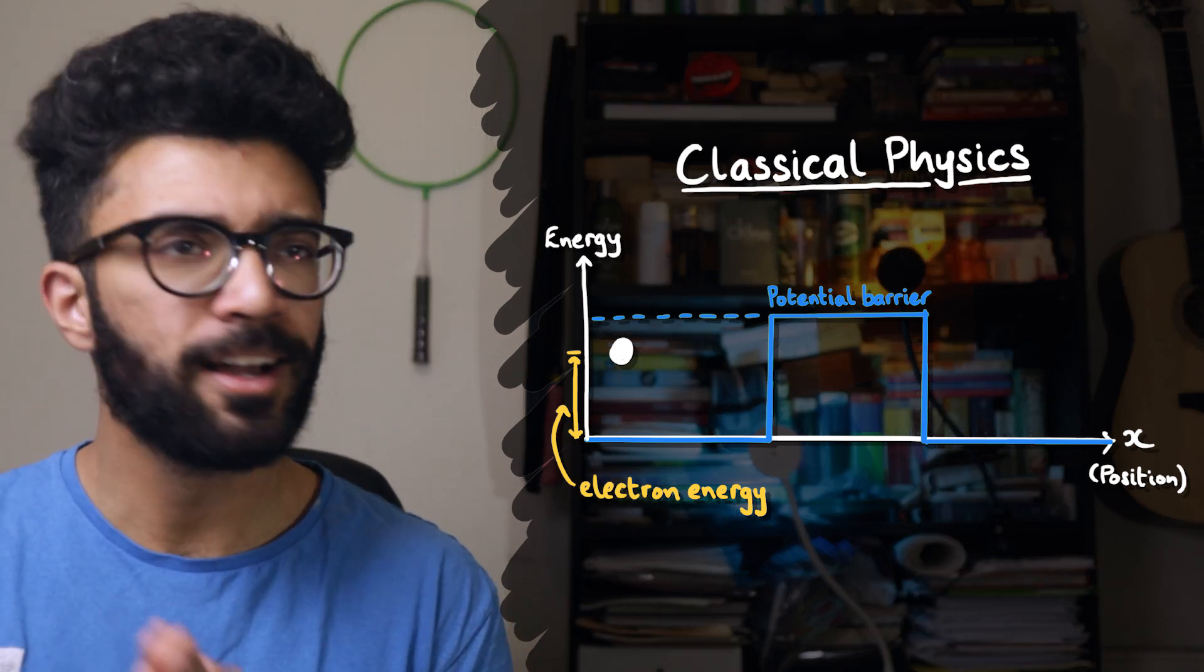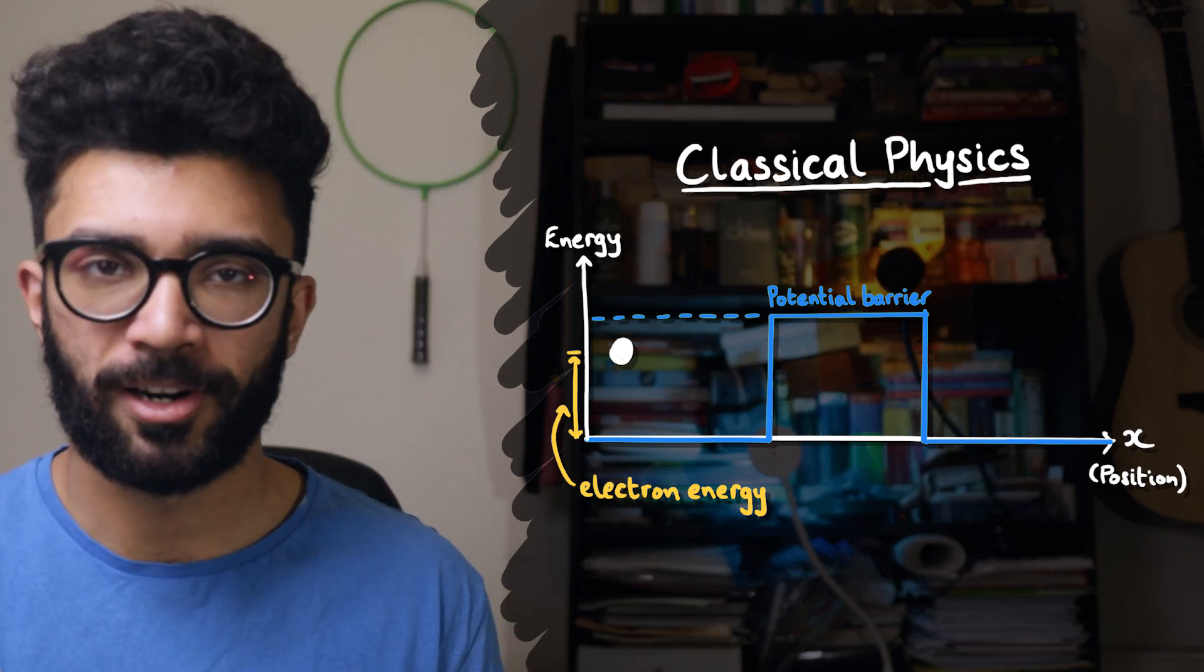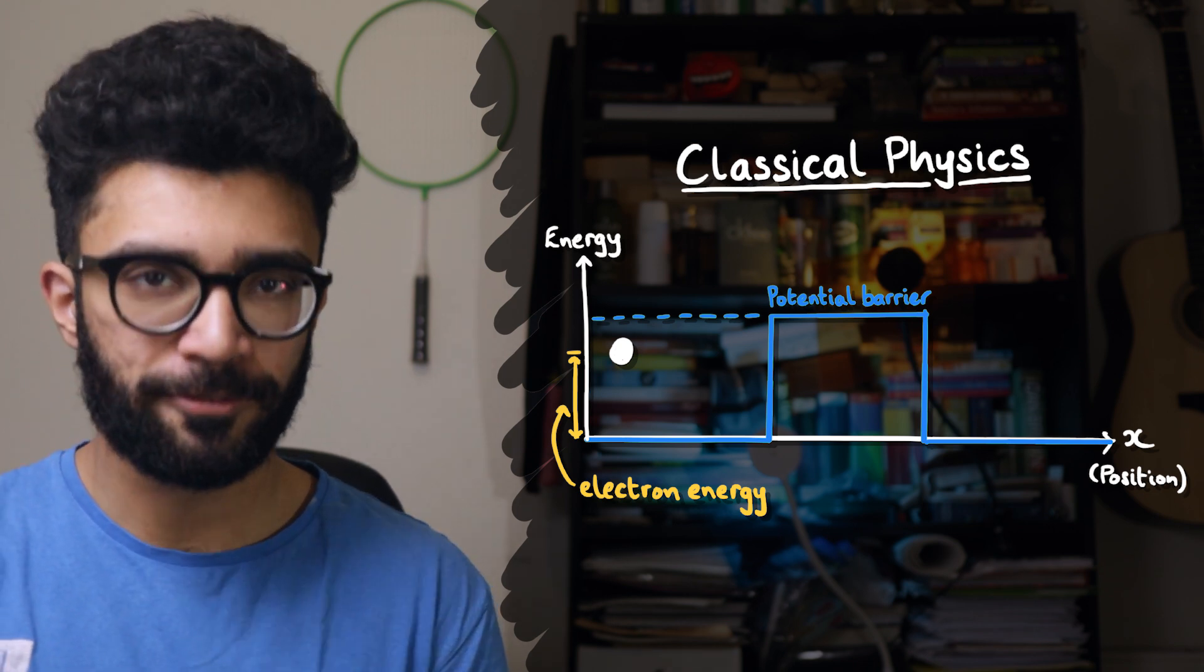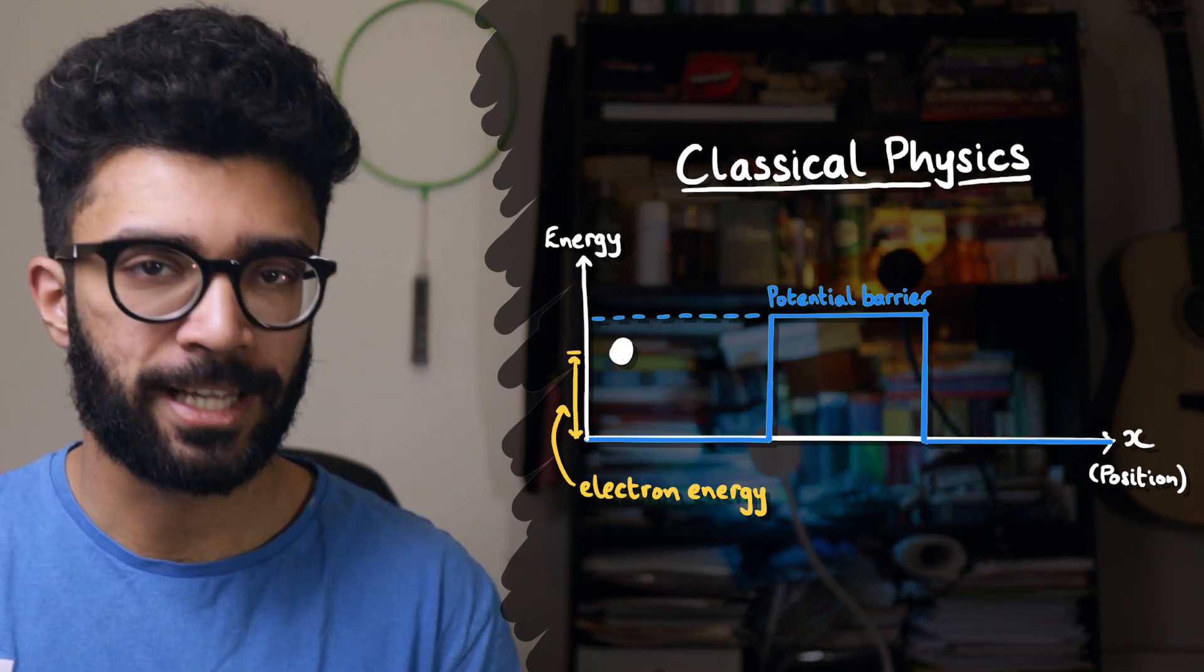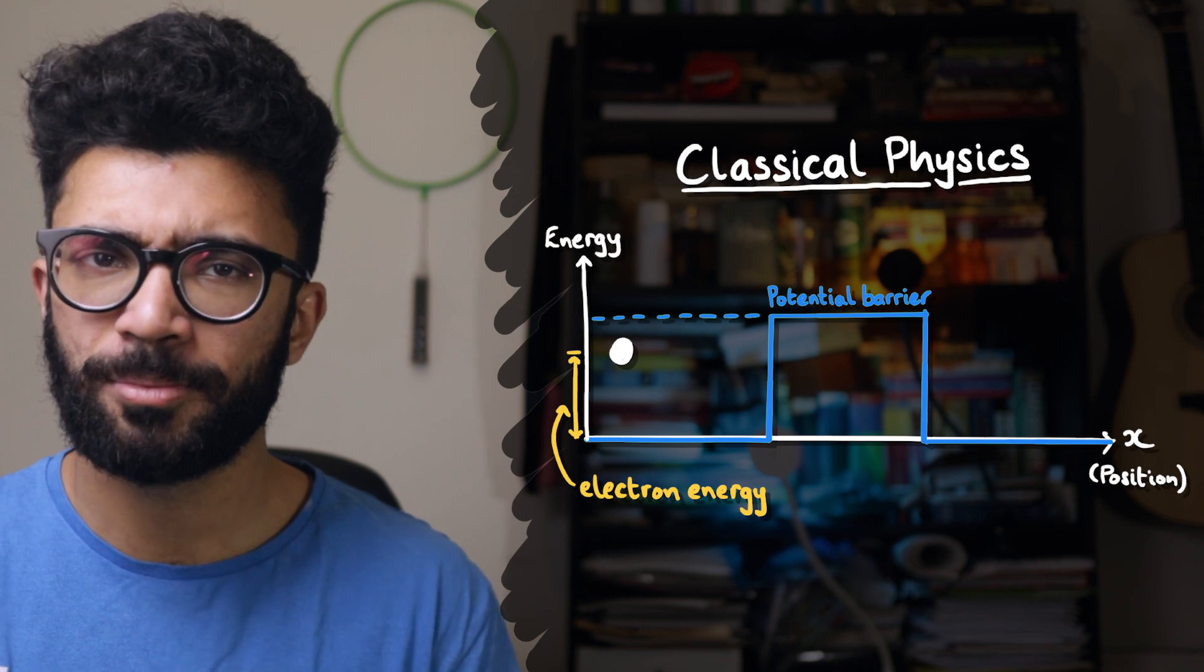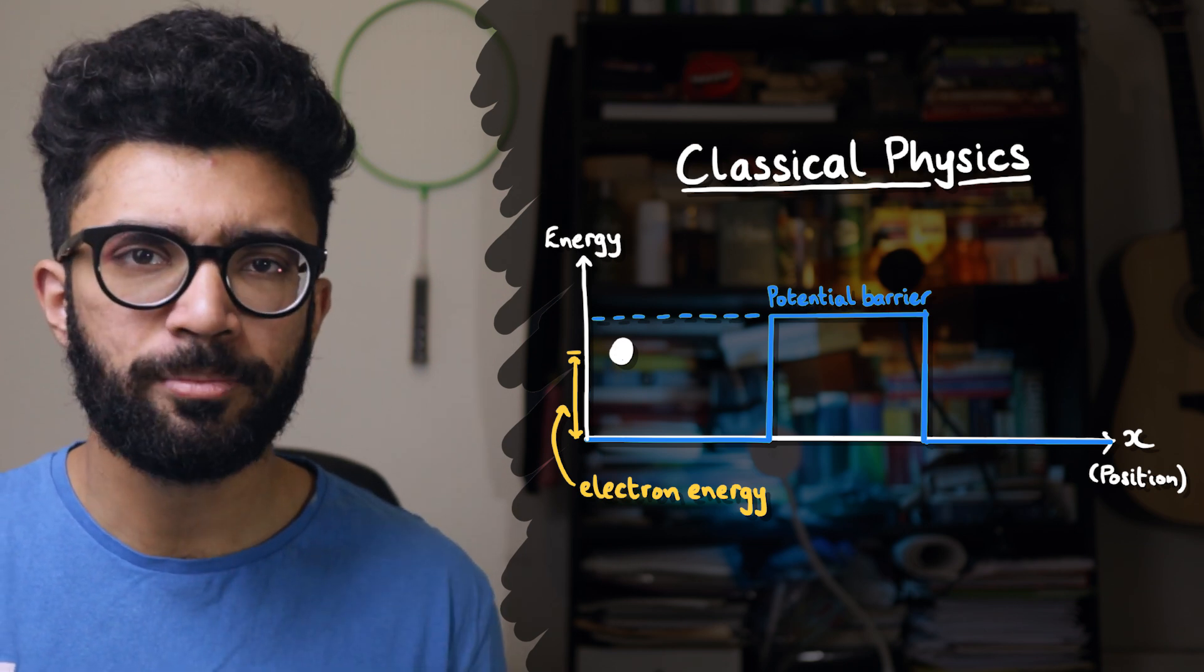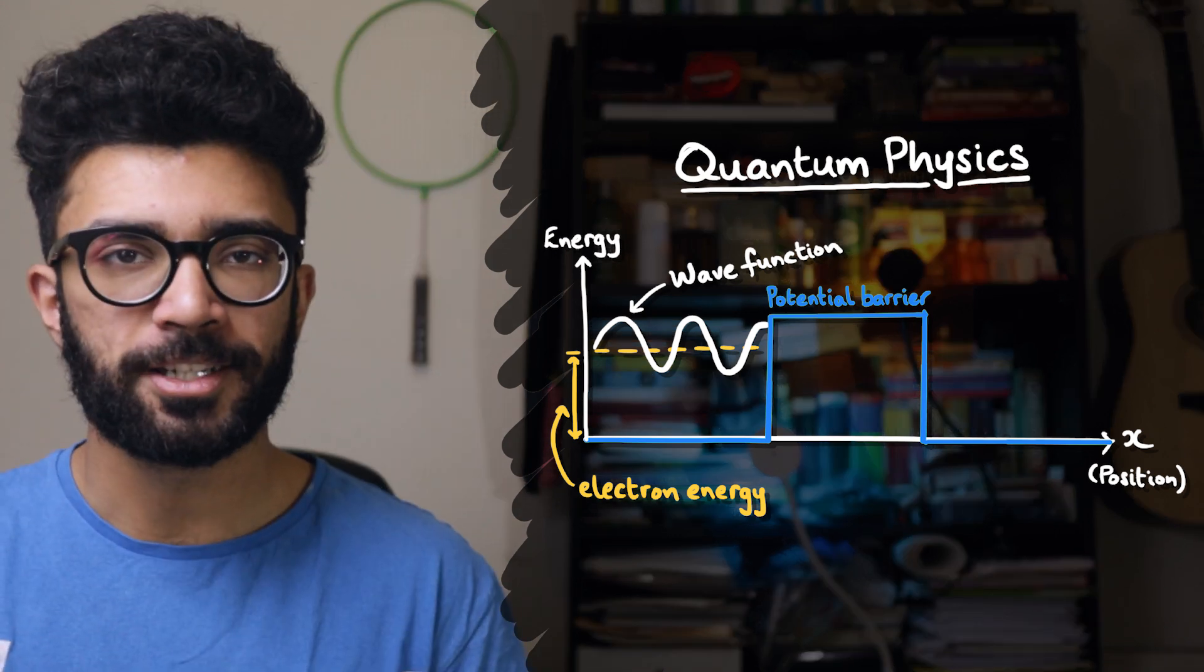Now, this diagram worked really nicely when we were describing the motion of our electron using classical physics. But as soon as we introduced quantum mechanics into this picture, things just got a little bit more complicated. And I don't just mean conceptually. When we brought quantum mechanics into the picture,